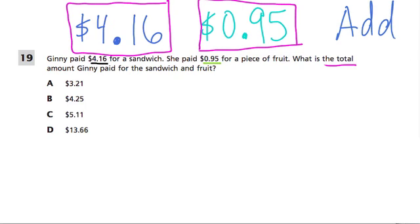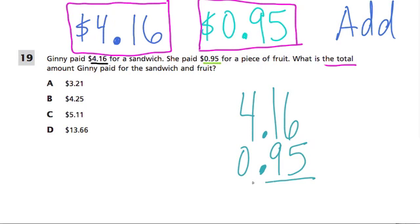How do we do that? Well, I think one nice and easy way to do it is just to stack the numbers up. So we have $4.16. We can ignore the dollar sign for now, and we don't need to take that into account. But when we line this up, make sure your decimals line up. So we have 0.95, and we're going to add these two.